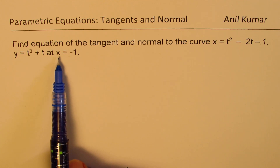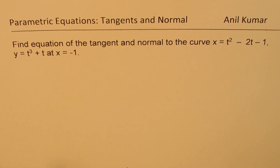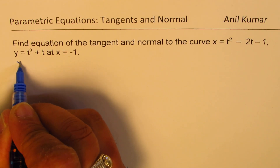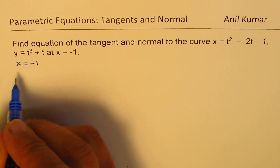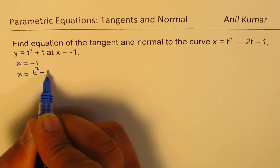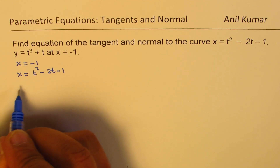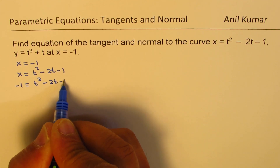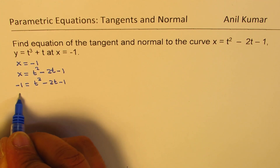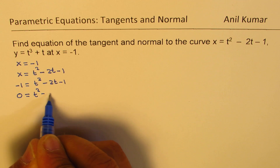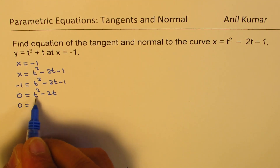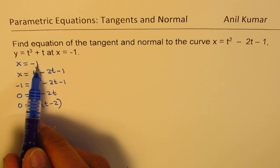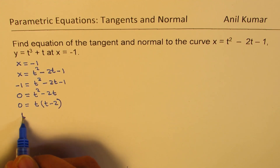In the first step, you need to find the value of y, so let's figure out the point. We are given x equals minus 1. We have the equation for x, which is t squared minus 2t minus 1. Substituting minus 1 for x, we get minus 1 equals t squared minus 2t minus 1. The minus ones cancel, giving 0 equals t squared minus 2t. Taking t common, we get t(t minus 2), so x equals minus 1 for t equals 0 or t equals 2.